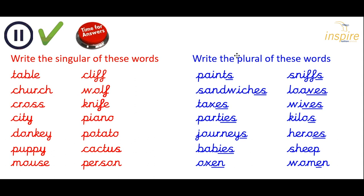The plural of these words will be paints — just add an S. Sandwiches, add ES, because you've got the CH there and you've added an extra syllable. Tax: taxes, extra syllable, you need ES. Parties — Y to IES. Journeys — just add an S, we've got a vowel before the Y. Babies — Y to an I, add ES. Ox: oxen — did you remember that tricky one? Sniff: sniffs, just add an S.